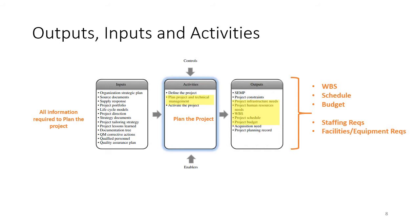In terms of outputs, you take all the information related to the project and planning for the project, and that generates the project plan. The primary outputs are a work breakdown structure (WBS), a schedule, and the budget. Associated with the schedule and budget are staffing requirements and facility and equipment requirements.